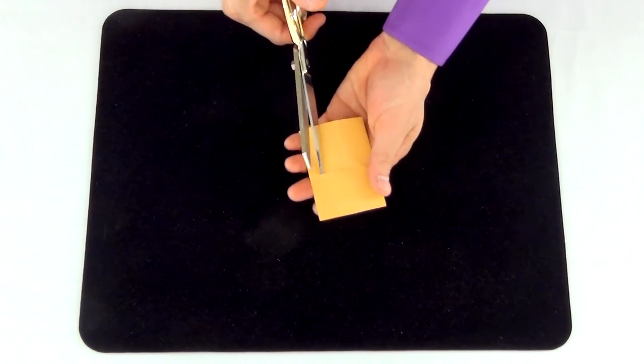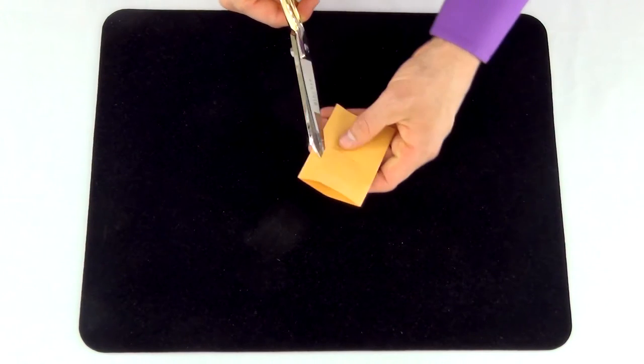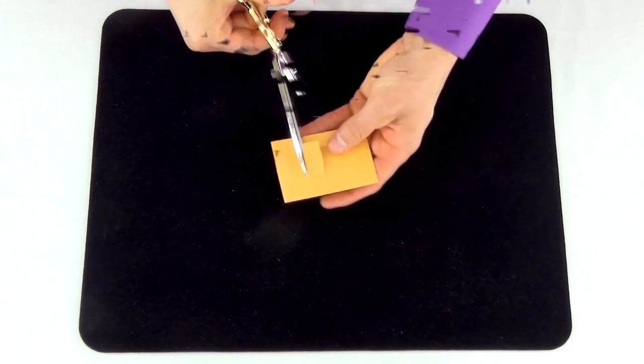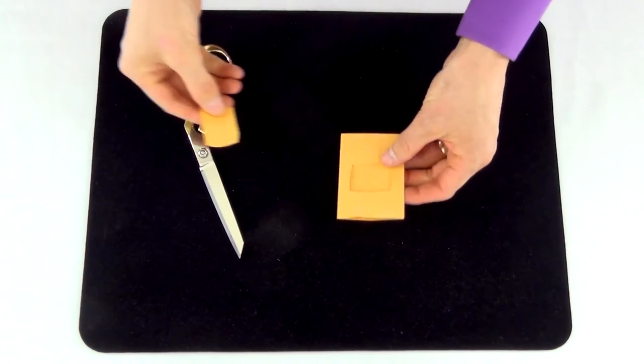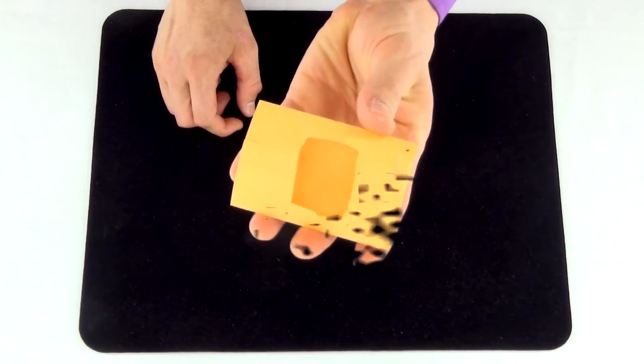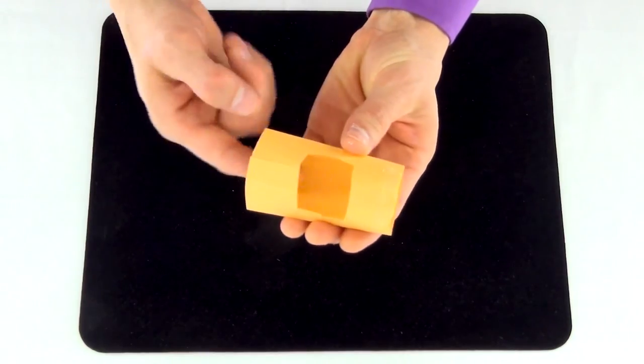You're now going to cut out a square in the back of the envelope, measuring approximately 3 quarters of an inch wide by an inch to an inch and a quarter tall. Once you've cut this hole out of the back of the envelope, you're ready to present the trick.